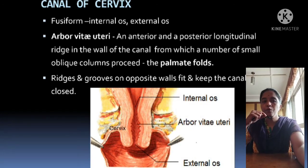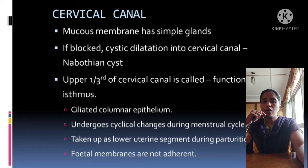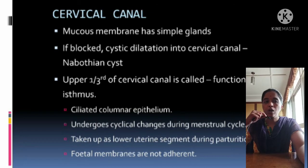The mucosal membrane contains simple glands. If the glands get blocked, it produces cystic dilatation into the cervical canal. These are called Nabothian cysts.